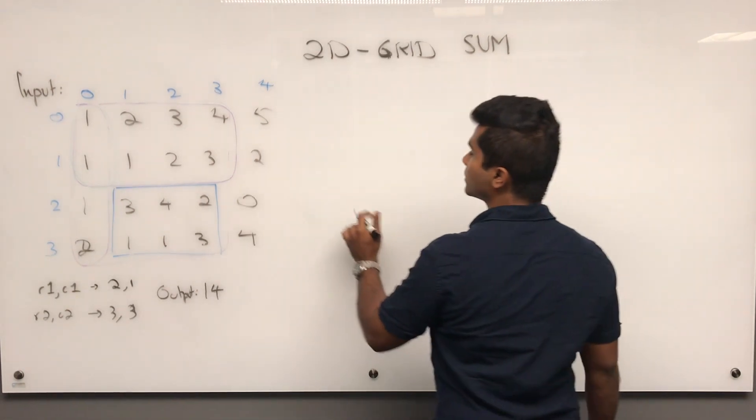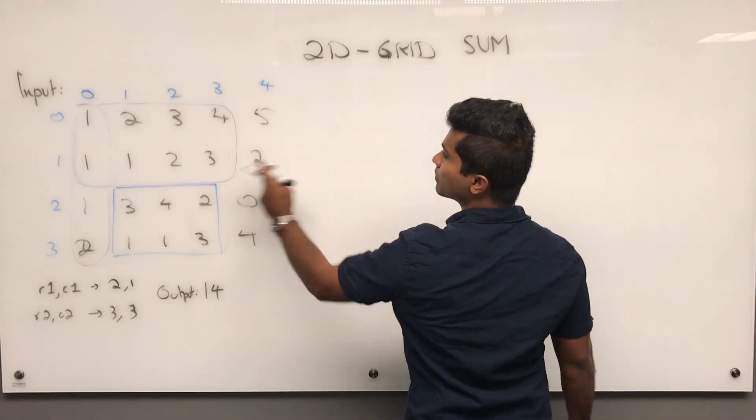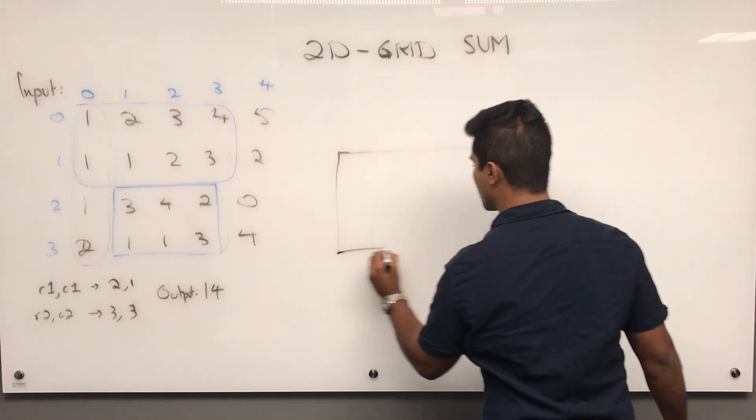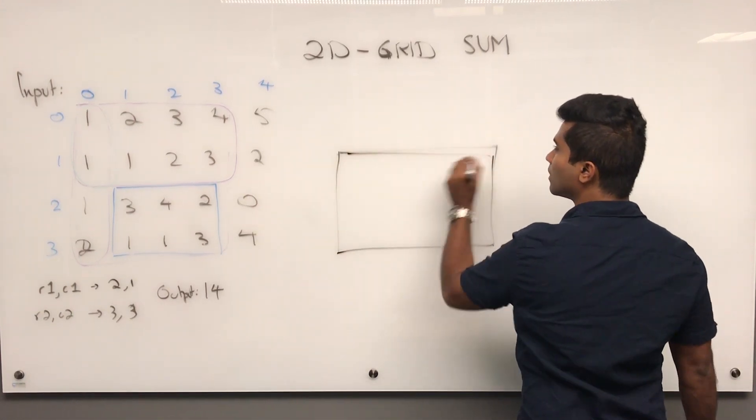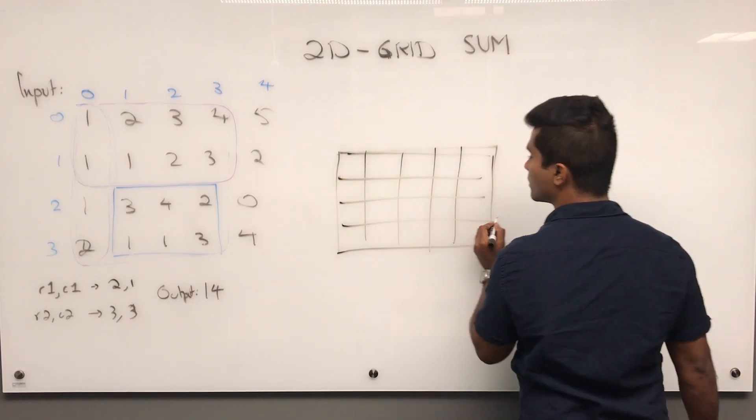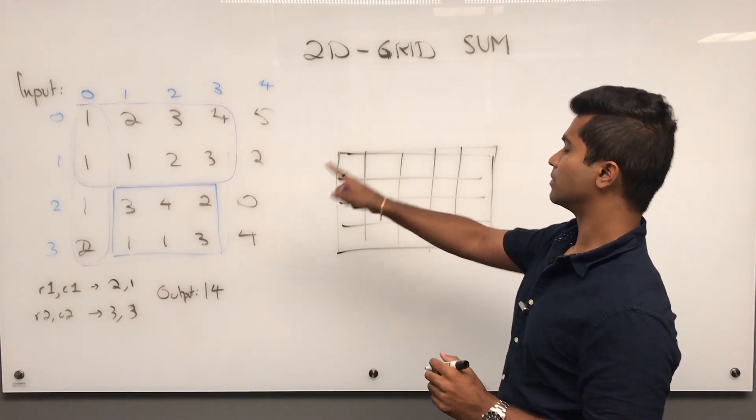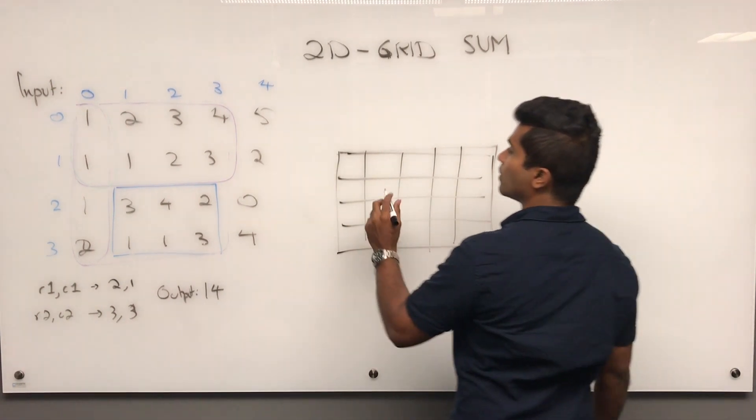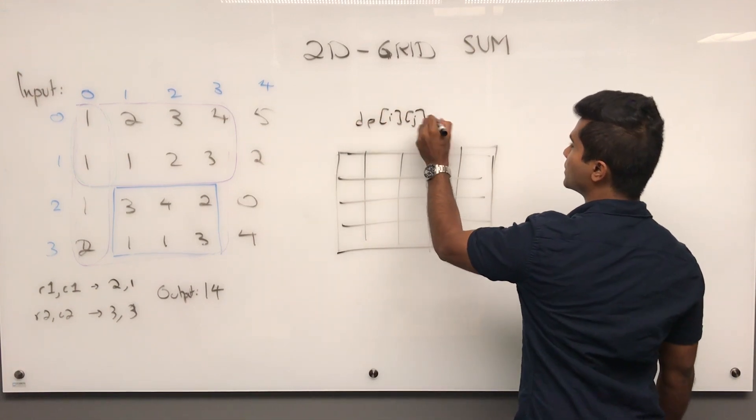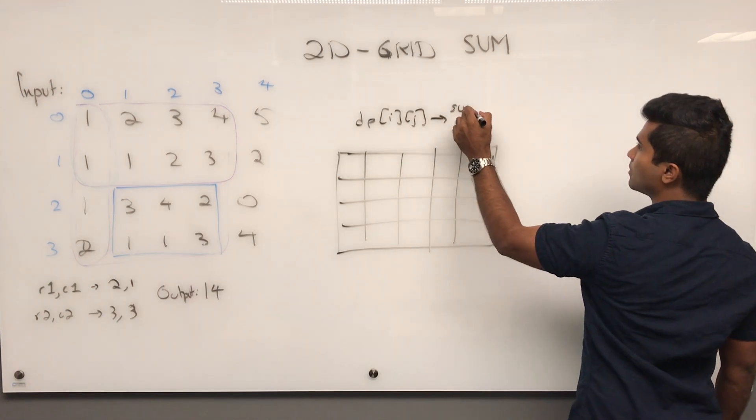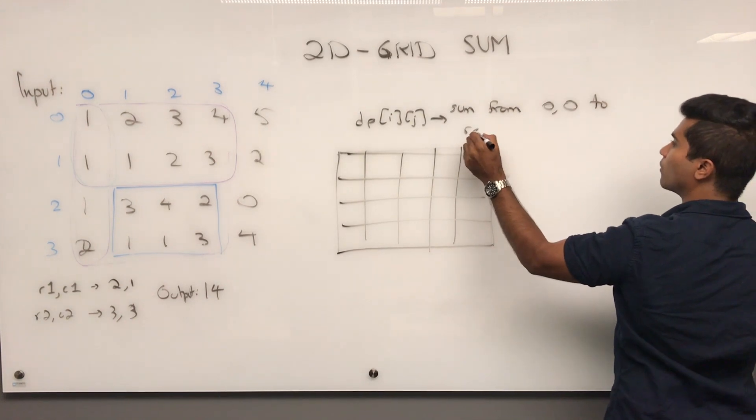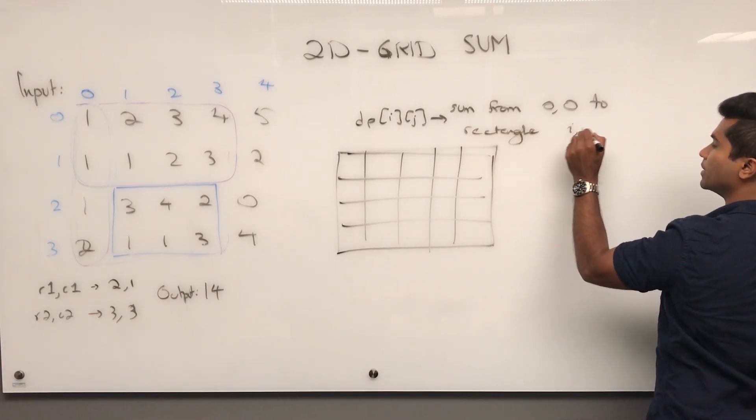So our grid is going to be the same dimensions. So 1, 2, 3, 4, 5, 1, 2, 3, 4. So what this DP means, DP of i of j represents sum from 0, 0 to rectangle i, j.